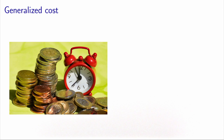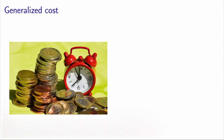Sometimes we have to introduce the concept of generalized cost. Consider a road network with a toll road. This toll road is associated with two quantities: a travel time of 30 minutes, and a travel cost of 10 francs. We have two components contributing to the cost in two different units — one in minutes and one in Swiss francs.